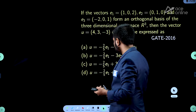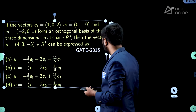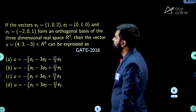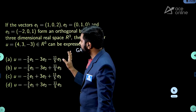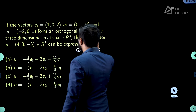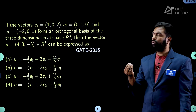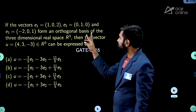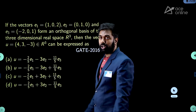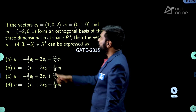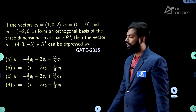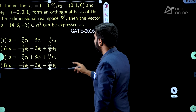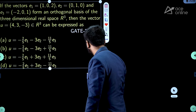The next question: if vectors e₁, e₂, and e₃ form an orthogonal basis for the three-dimensional real space R³, then the vector u = (4, 3, −3) can be expressed as? They gave an orthogonal basis, meaning the vectors are linearly independent, span R³, and any two are perpendicular (dot product = 0). The question is how to express u as a linear combination of e₁, e₂, e₃.